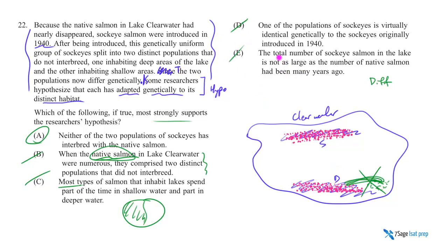And E is even more worthless. The total number of sockeye is not as large as the native salmon population was at its peak. So they're three salmon short of some high number? It's completely unclear what this is supposed to do for the hypothesis.